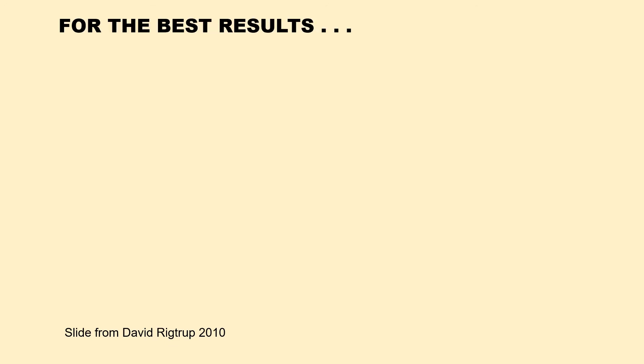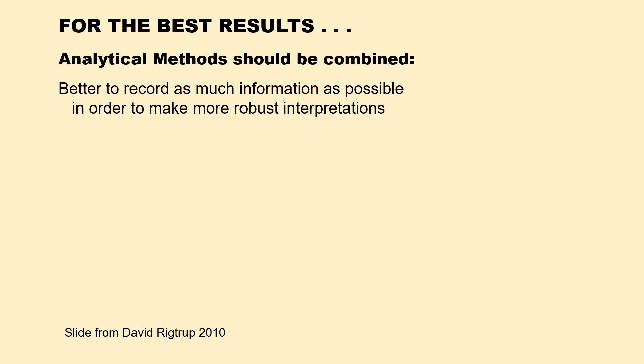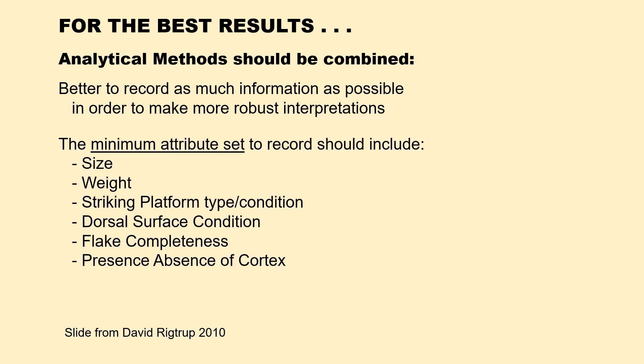For the best results, you should combine analytical methods, and it's better to record as much information as possible in order to make more robust interpretations. David Rigtrip recommends that the minimum attribute set to record should include size of flakes, weight, striking platform type and condition, dorsal surface condition, presence and absence of cortex, and flake completeness.